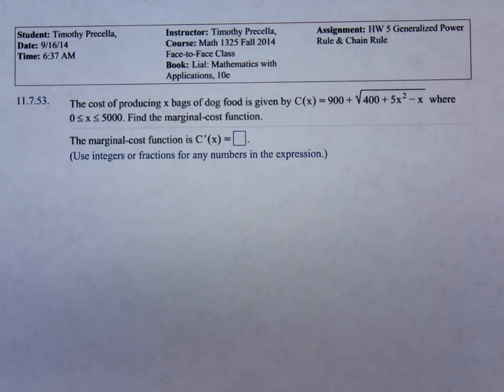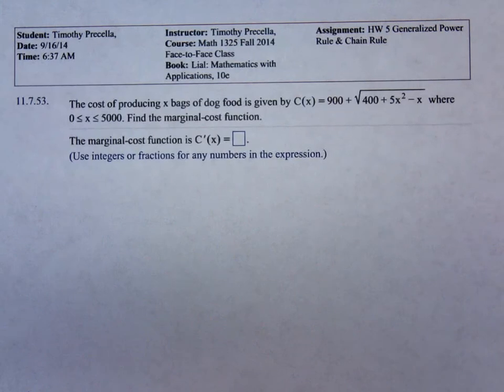The cost of producing x bags of dog food is given by C(x) equals 900 plus the square root of the trinomial 400 plus 5x squared minus x, where x is bounded between 0 and 5000. Find the marginal cost function.